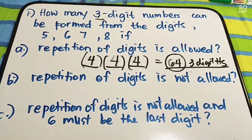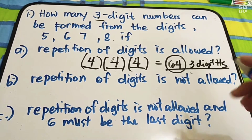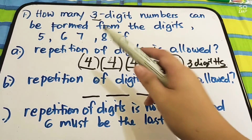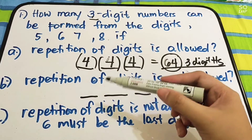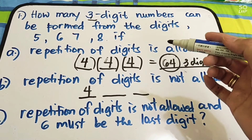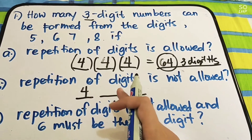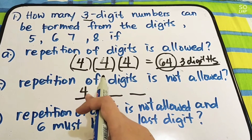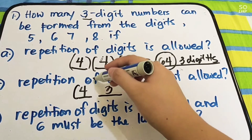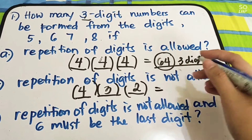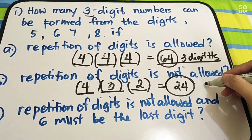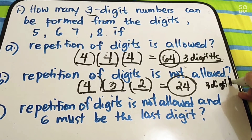Next, let us have letter B — repetition of digits is not allowed. We have three digit positions: one, two, three. We have four objects. So, sa unang digit, pwede si five, six, seven, and eight — that is four objects. Sa pangalawang digit, hindi na pwedeng maulit yung isa mong nakuha, kaya three na lang ang involved. Then, ilan na lang ang involved? We have two. So, we have four times three times two. The answer here is twenty-four three-digit numbers.